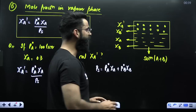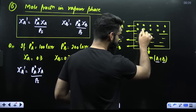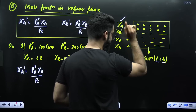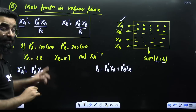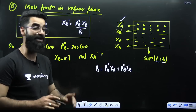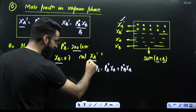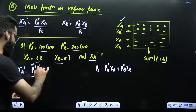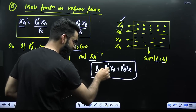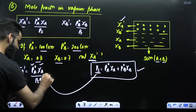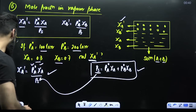Concept number 6: how to calculate mole fraction of a component in the vapor phase. For a solution of A and B (both volatile), Chi_A' (mole fraction of A in vapor phase) equals P⁰_A × Chi_A divided by P_S, and similarly for B. P_S is the total vapor pressure of solution, which by Raoult's law equals P⁰_A × Chi_A plus P⁰_B × Chi_B. First calculate P_S, then substitute to get the mole fraction of A in the vapor phase. This is a frequently asked short question in competitive examinations.